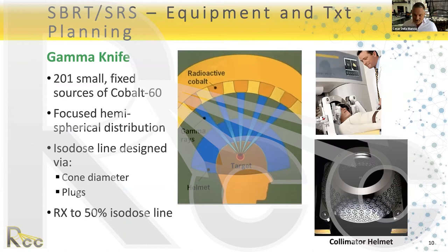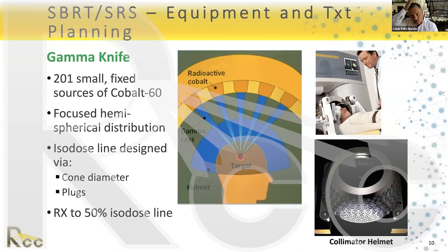Gamma Knife has been used since the 1960s. It's a machine with around 201 small fixed sources of Cobalt-60 arranged in a hemispherical distribution. The beams are designed via cones of varying diameter with plugs to conform the fields to the target. Prescription doses for Gamma Knife are normally prescribed to the 50% isodose line, related to the Cobalt-60 energy and the machine's cone-and-plug design.